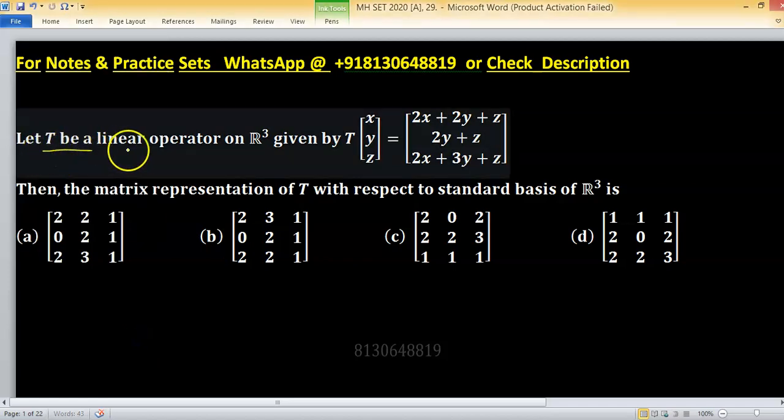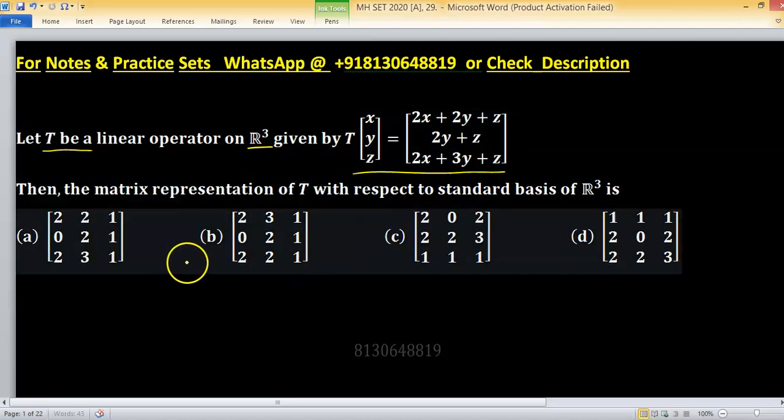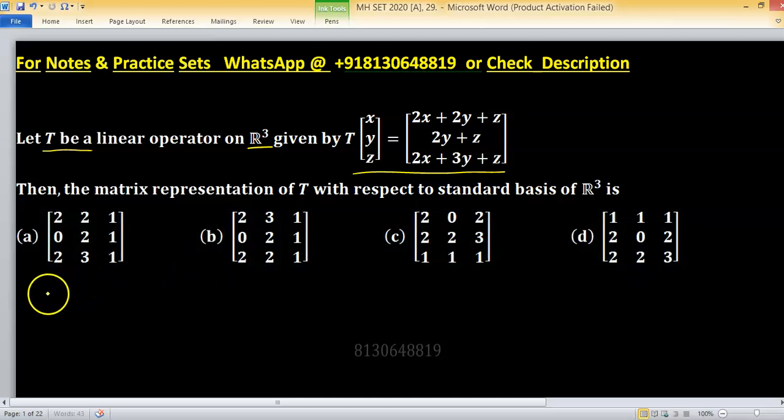Let T be a linear transformation on R³ and given structure is this. We have to find matrix representation of T with respect to standard ordered basis. So domain vector space is R³ and co-domain is same, and standard ordered basis for this vector space represented